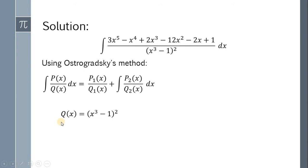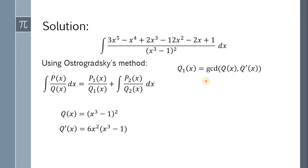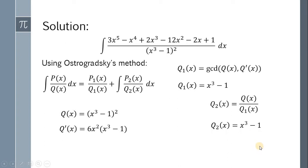So let's start. We have Q of x is equal to x cubed minus 1 quantity squared. It follows that the derivative of Q of x is equal to 6x squared multiplied by x cubed minus 1. Thus, Q sub 1 of x is equal to x cubed minus 1, the GCD of Q of x and the derivative of Q of x. It follows that Q sub 2 of x is equal to x cubed minus 1 also, because x cubed minus 1 quantity squared divided by x cubed minus 1 gives us x cubed minus 1.